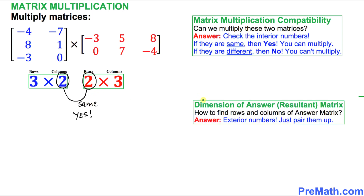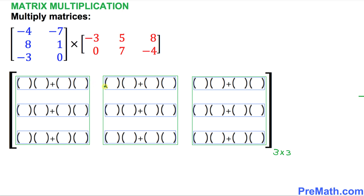In this next step we want to find out the dimension of our answer matrix — what the resultant matrix is going to look like. For that, we focus on the exterior numbers, the numbers outside, and pair them up. This gives us three by three, meaning our resultant matrix is going to have three rows and three columns. Here is the road map of our answer matrix with those three rows and three columns.